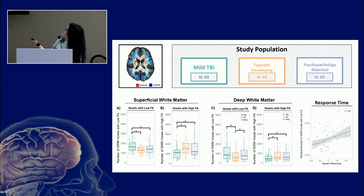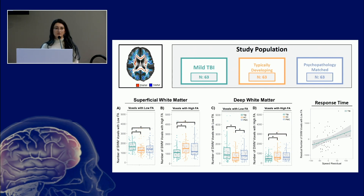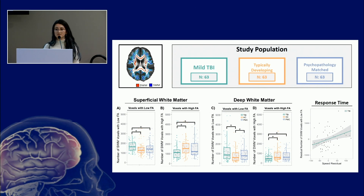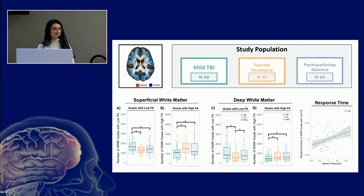These are our groups. We looked at a subset of individuals from the PNC, or the Philadelphia Neurodevelopmental Cohort. We had 63 children with mild traumatic brain injury and then two control groups: typical healthy controls with no history of brain injury and no psychopathology, and a psychopathology-matched group to try and get at some of the confounds we might see in brain differences due to symptoms that are common post-TBI.